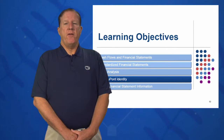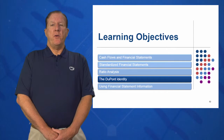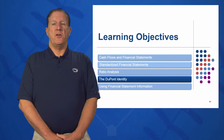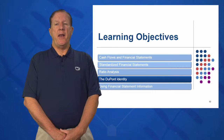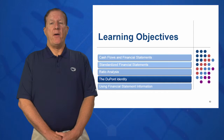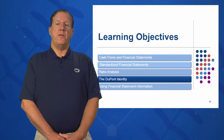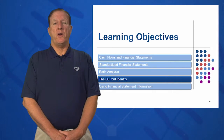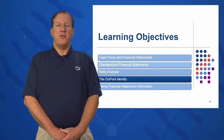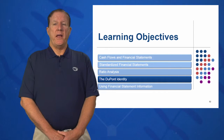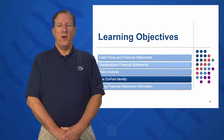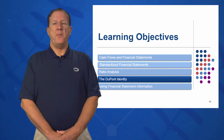In the fourth learning objective for session three, we're going to look at the DuPont identity, a very important relationship between net income and equity. We're going to look at the details of it, how the net return on equity was broken into three pieces to better understand how to measure return on equity, and some actions we can take to improve our net return on equity equation and position in the company.